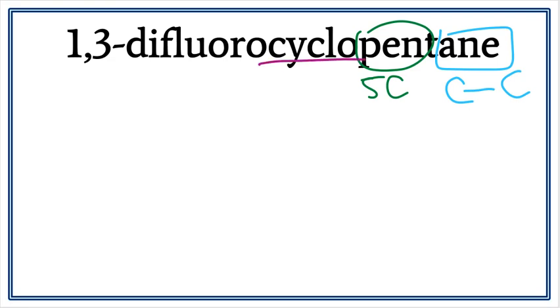We see the word cyclo here. This means that the five carbons are arranged in a ring. When we have five carbons in a ring, we just have a pentagon.